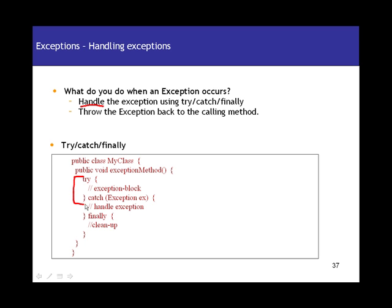Whatever code you put in the try block, there is a chance it throws an exception, but it might not throw as well. You put exception-prone, error-prone code within the try block, and you handle the exception in the catch block. You can catch a specific exception like FileNotFoundException, or you can catch the Exception class itself.